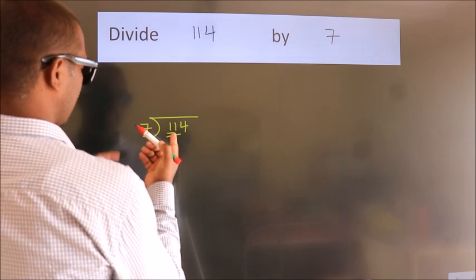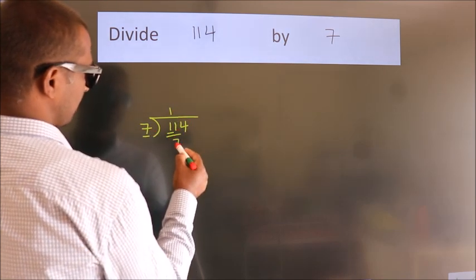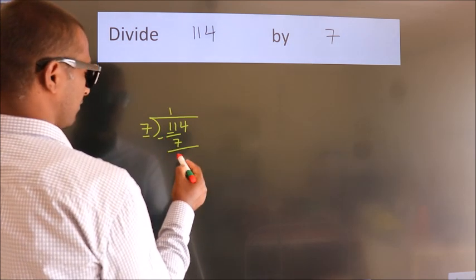A number close to 11 in the 7 table is 7 once, which is 7. Now we subtract and get 4.